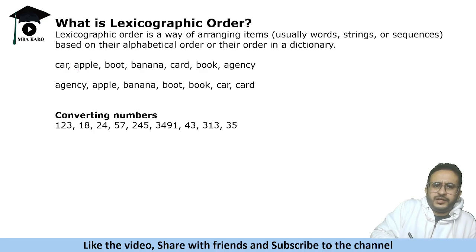Like suppose these are the words. Now we see that there are two words that start from A. But when we consider these two words, we look for the second letter. First letter is same, we look for the second letter. So second letter is G and P. So G comes before P. So agency will come first and then Apple. Now boot, banana and book. So B comes, B is the first letter. A comes first. So banana will come first. Now boot and book. So first three letters are same in both cases. K comes before T. So book, sorry, it should be book first and then boot.